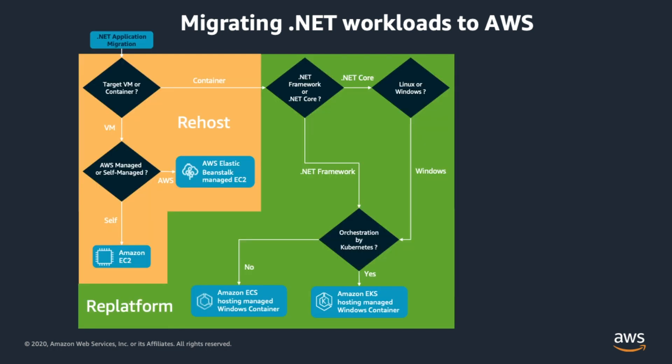The second option is re-platform. Irrespective of the .NET implementation in use — .NET Framework or .NET Core — we can migrate the application to Windows Containers. Containers allow applications to be bundled with their own libraries and configuration files and execute in isolation on a single OS kernel, bringing a number of benefits. The choice here is the container orchestration engine: if your organization has invested in Kubernetes, Amazon Elastic Kubernetes Service (EKS) meets your needs. If you are beginning your container journey and prefer not to manage the orchestration engine yourself, Amazon Elastic Container Service (ECS) is the way forward, offering deep integration with other AWS services.